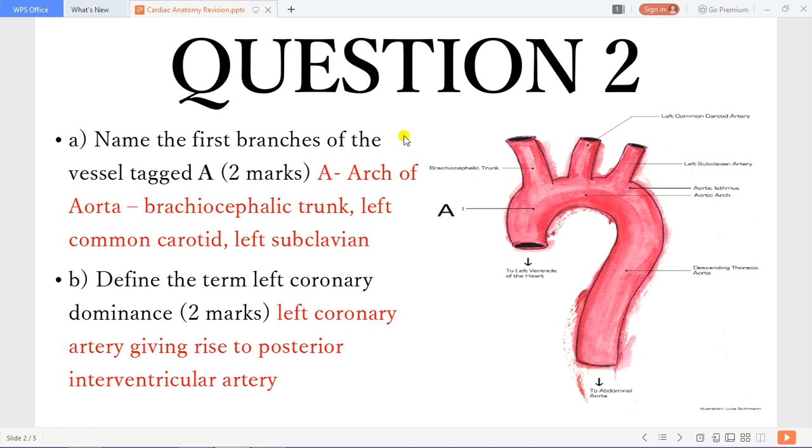Now this is the arch of the aorta so you can see the brachiocephalic trunk, the left common carotid and the left subclavian artery. The term left coronary dominance refers to when the left coronary artery gives rise to the posterior interventricular artery.